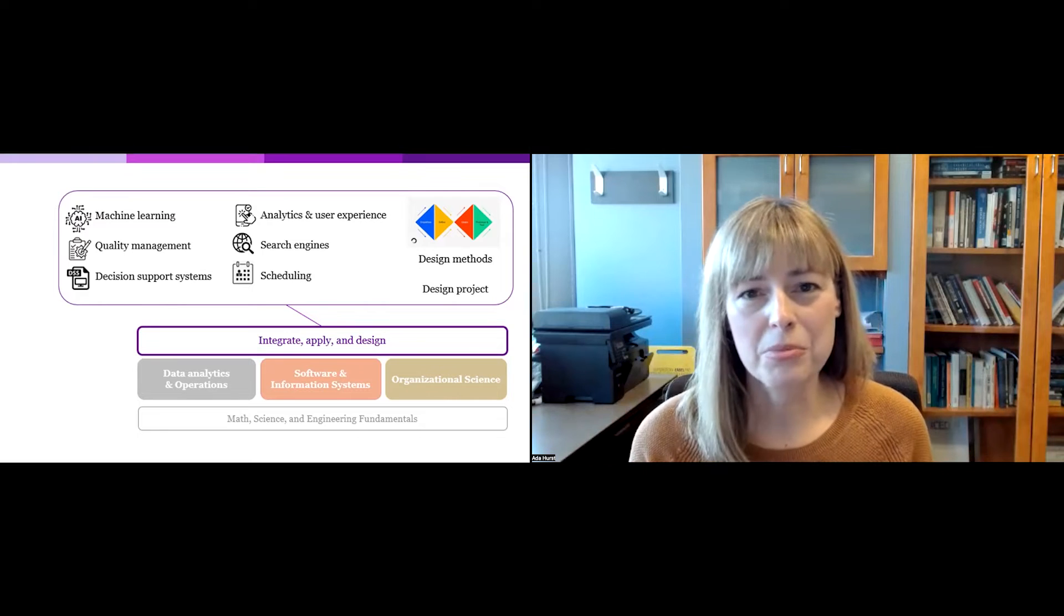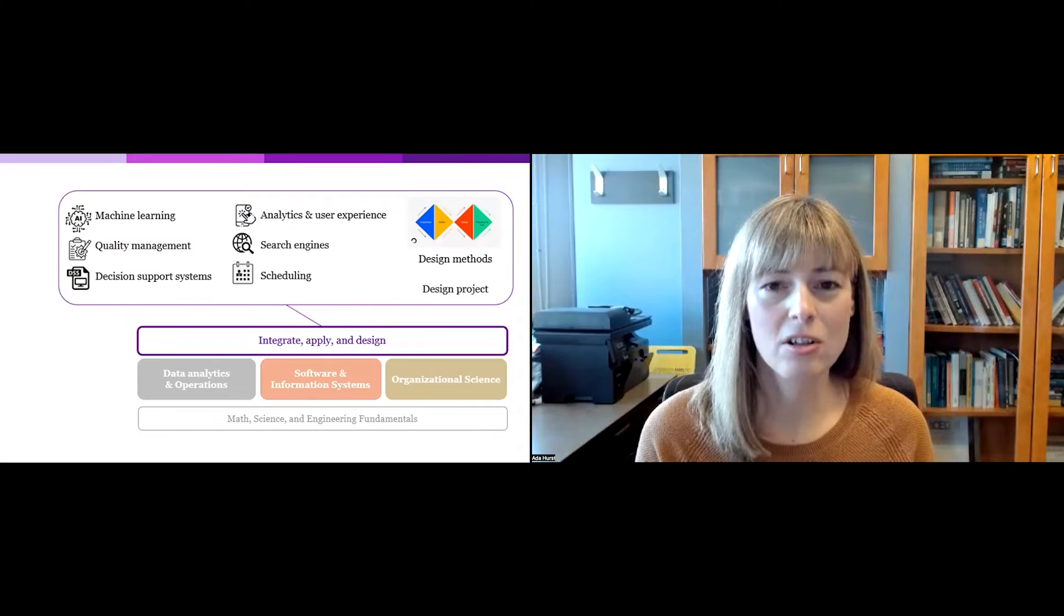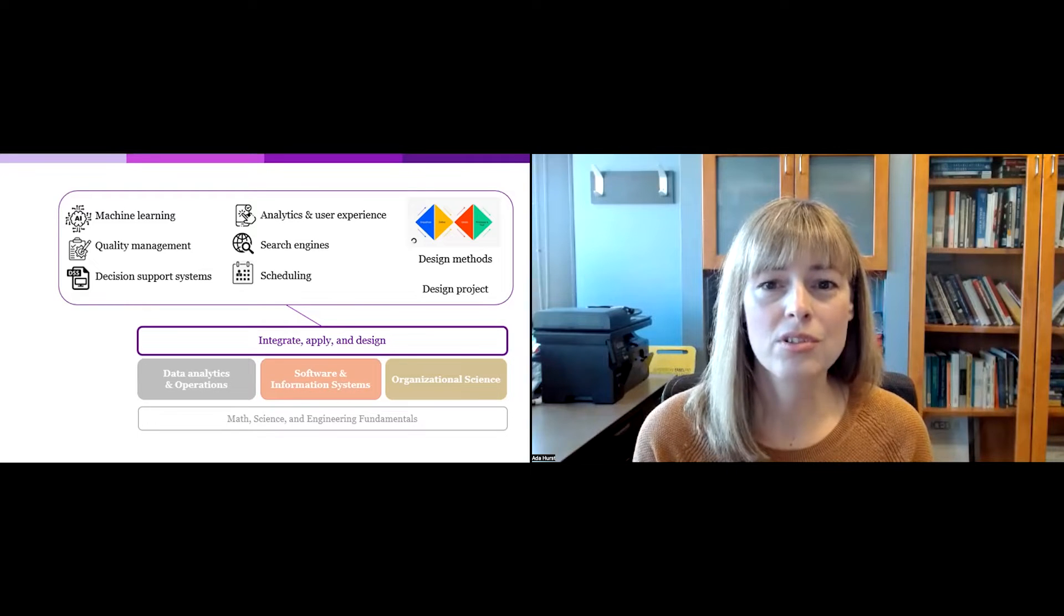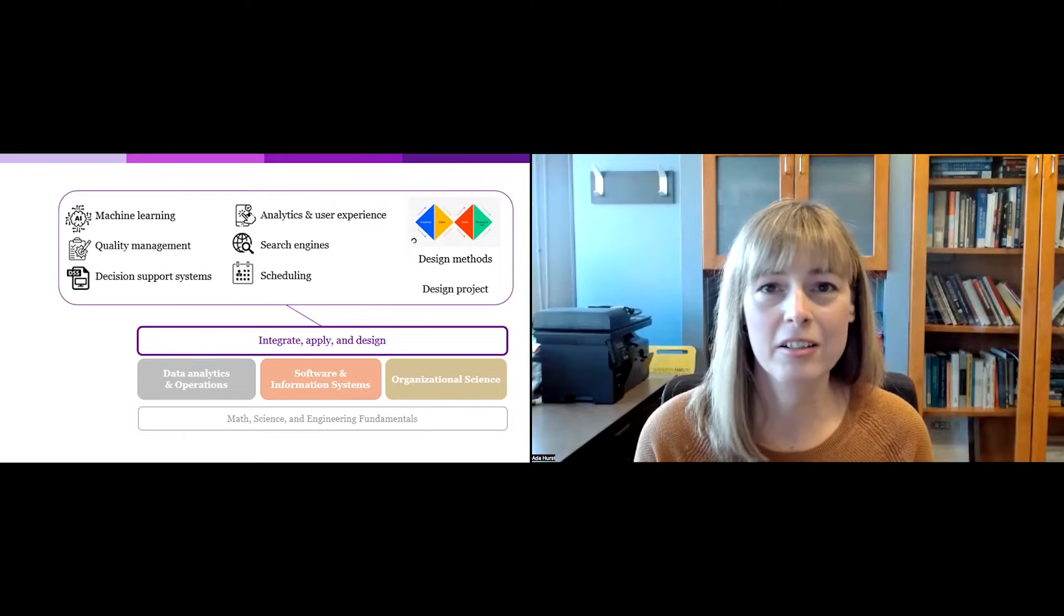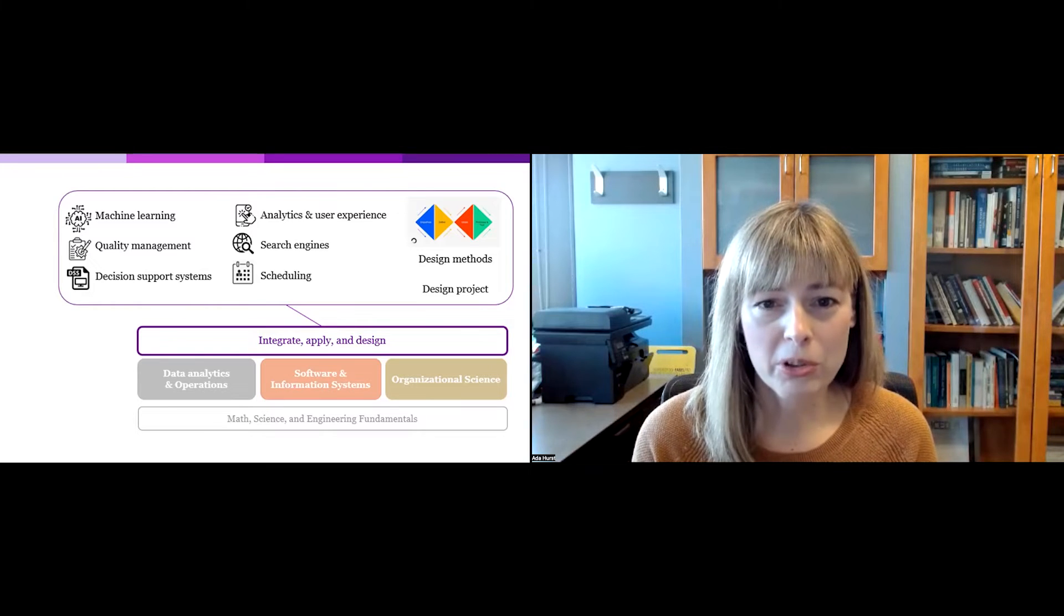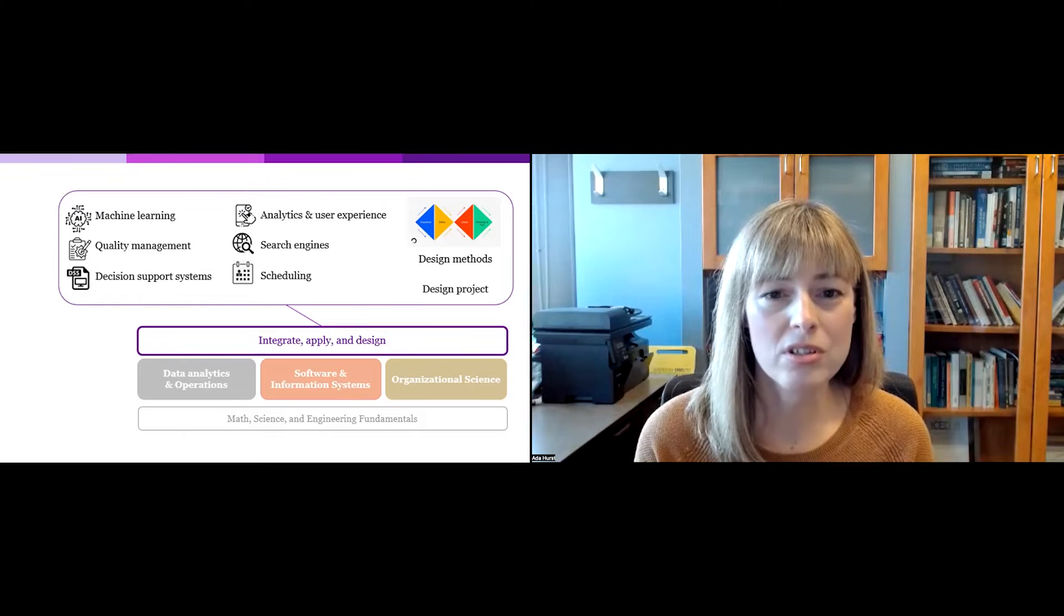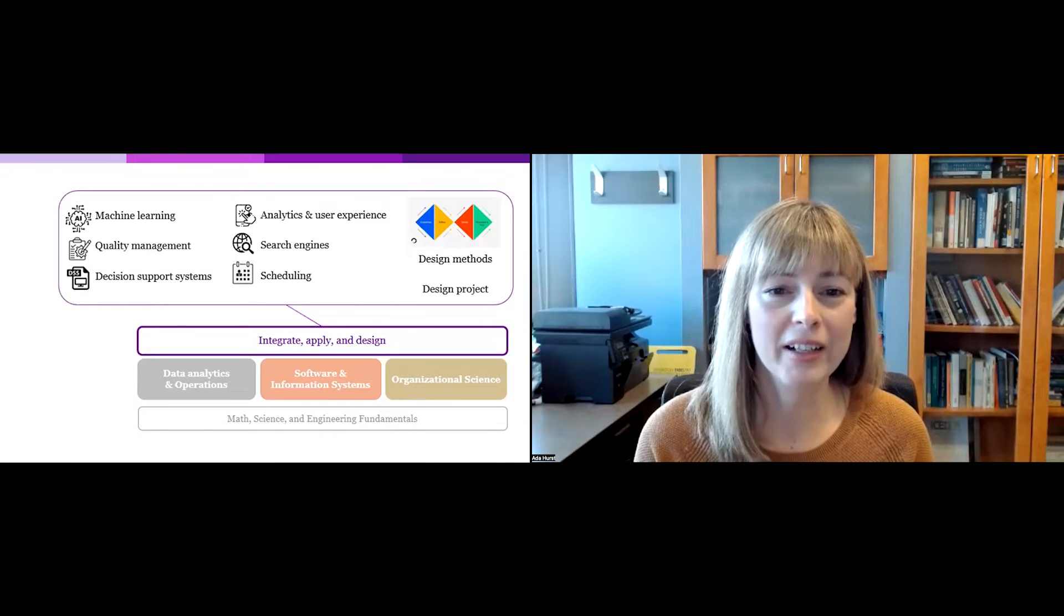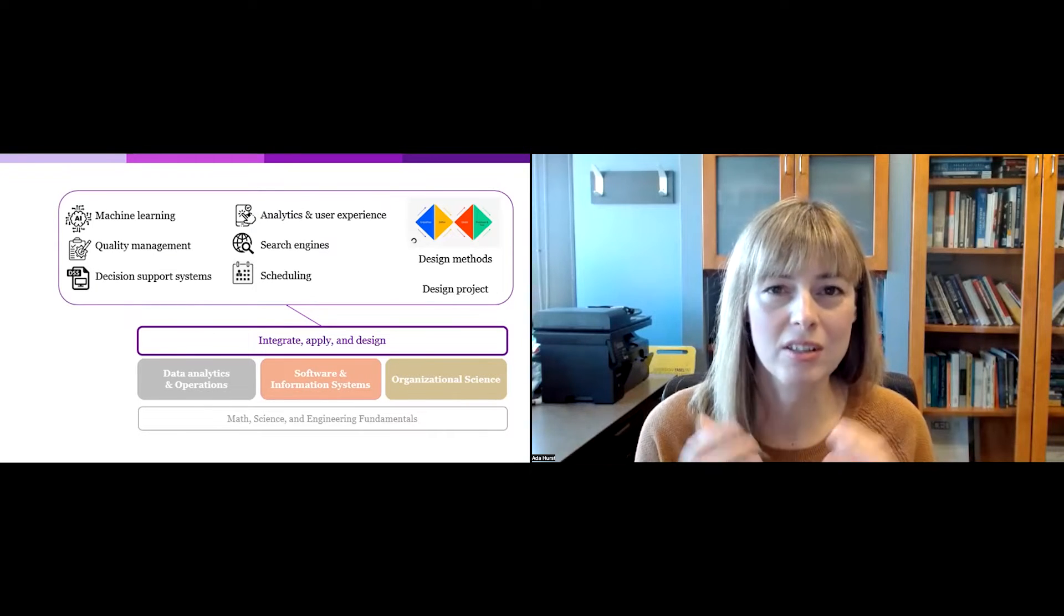In the more senior terms, students begin to integrate all of the knowledge from the three areas and then apply this knowledge to the designing of engineering solutions. Through electives, students can learn about a variety of topics including machine learning, quality management, scheduling, analytics, and user experience in software products. Core to the program are courses in design methods and even a sequence of two courses in which students work on a big design project. Students learn how to find and analyze a real problem and then develop a solution to address it. That's what design is.